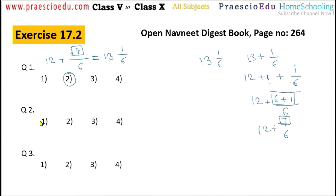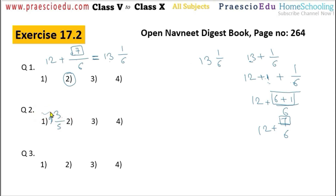Question number 2: Which of the alternatives shows the correct conversion of the fraction? Checking option number 1: 9 and 3/5. Converting: 5 nines are 45, plus 3 is 48/5. But option 1 shows 93/5, so this is an incorrect statement. Option number 2: 10 and 7/8. Converting: 8 times 10 is 80, plus 7 is 87/8. Yes, this is correct. So option number 2 is correct.